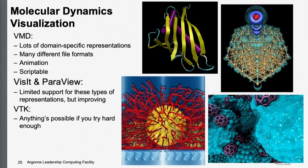Some representations are more domain-specific. Here are a number of different representations for molecular dynamics data using VMD — you'll hear more about that today. It has lots of domain-specific representations: you can find the backbone of a protein or a compound, and often set the display attribute by the atom type. VisIt and ParaView do have some limited and growing capabilities for these domain-specific types of visualization, and with VTK anything's possible if you try hard enough.